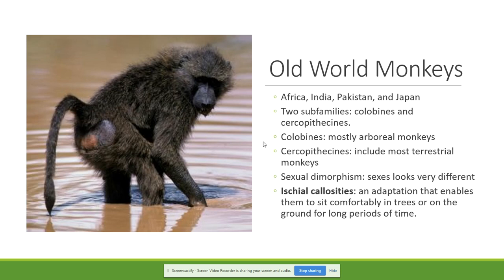Old world monkeys exhibit something called sexual dimorphism, which is a very important characteristic. Sexual dimorphism means there is a very marked difference between the male and female of a species — it could be in size, weight, teeth, or appearance. In new world monkeys, we don't see that big a difference; sexual dimorphism is something we see more in old world monkeys and apes. Some old world monkeys also have an adaptation called ischial callosities — a kind of cushion that enables them to sit on the ground comfortably for long periods of time.